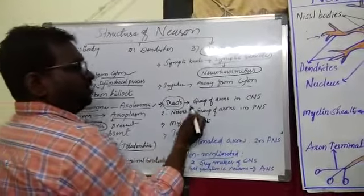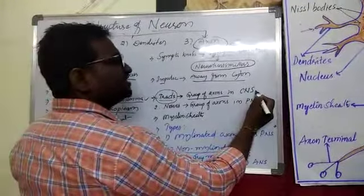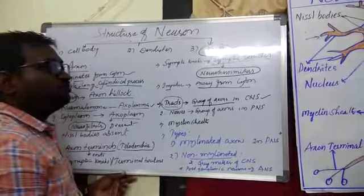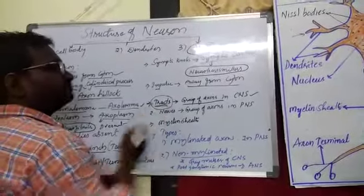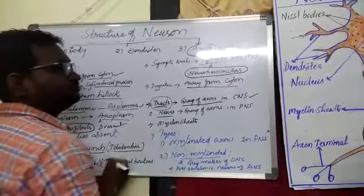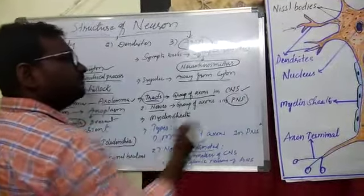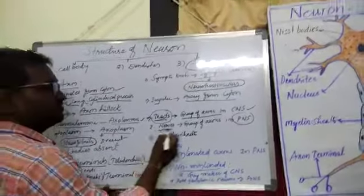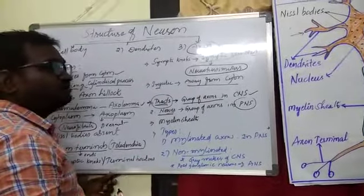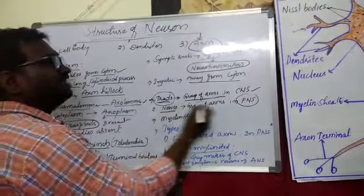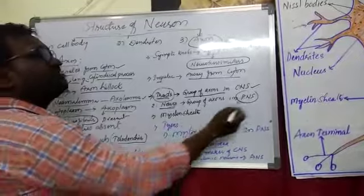The group of axons in the CNS, that means in the Central Nervous System, they are called as tracts. And the group of axons in the PNS, that means Peripheral Nervous System, they are called as nerves. So the group of axons forms tracts in the CNS and nerves in the Peripheral Nervous System.